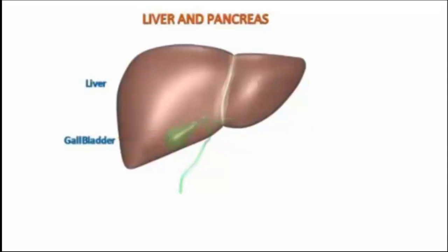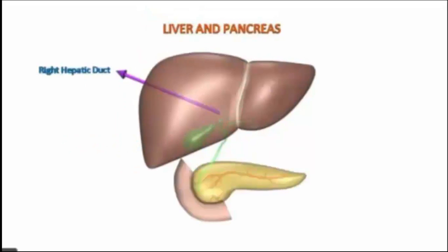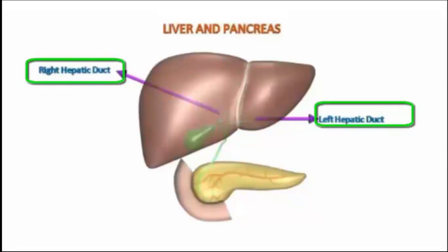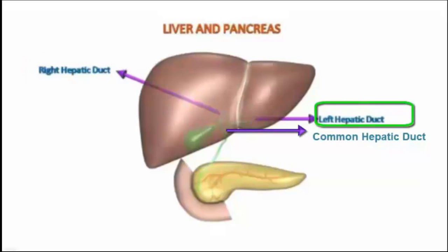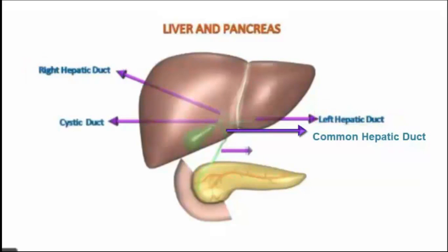The gallbladder is structurally similar to the stomach and has a body and a neck. Hepatic ducts start from the liver lobes and carry the bile. There is a pair of hepatic ducts — right and left — which join together to form a common hepatic duct. This common hepatic duct joins with the cystic duct of the gallbladder to form a common bile duct.